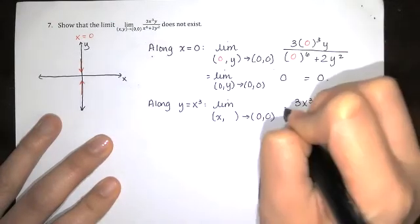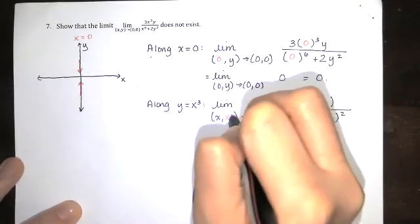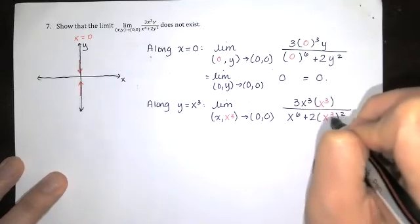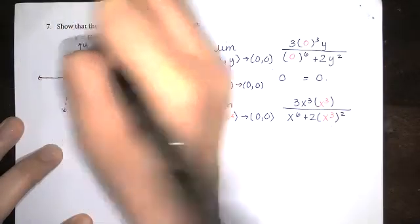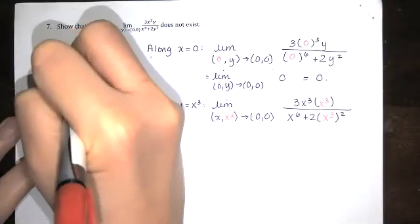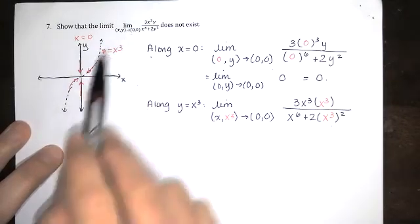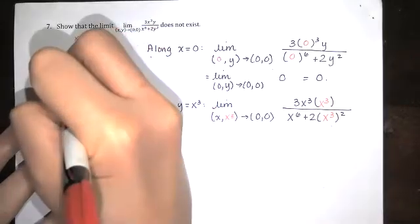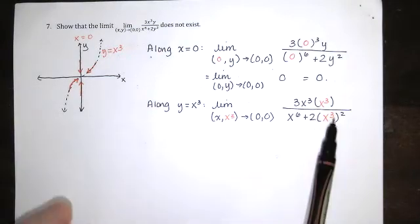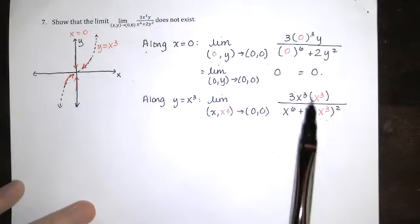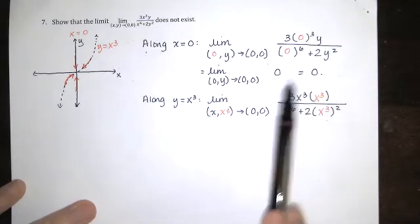And I'll show you in just a minute why this works. So I'm approaching 0, 0. I've got 3x cubed times y over x to the sixth plus 2 times y squared. And I'm letting y equal x cubed. So here's the path y equals x cubed. We're approaching 0, 0 along this path now. You always have to choose a path that actually goes through that point. But y equals x cubed does go through 0, 0. We're approaching along this path. And the reason why I chose x cubed was look what happens. When I replace y with x cubed here and here, I end up with x cubed times x cubed is x to the sixth. And then I have x cubed squared. That's another x to the sixth. And then x to the sixth is everywhere. So it's going to simplify really nicely.